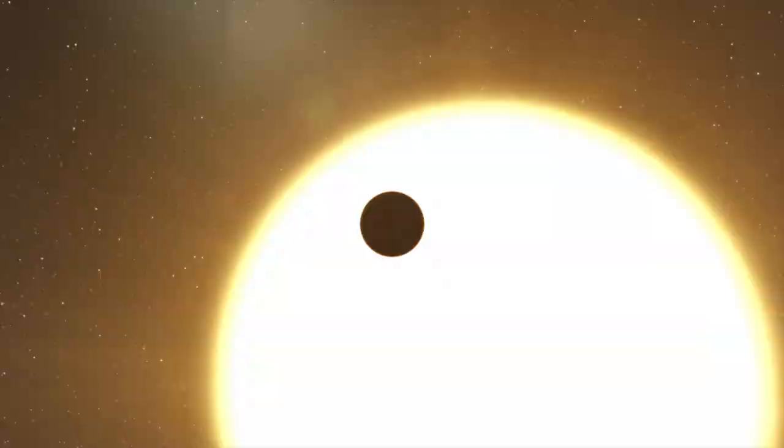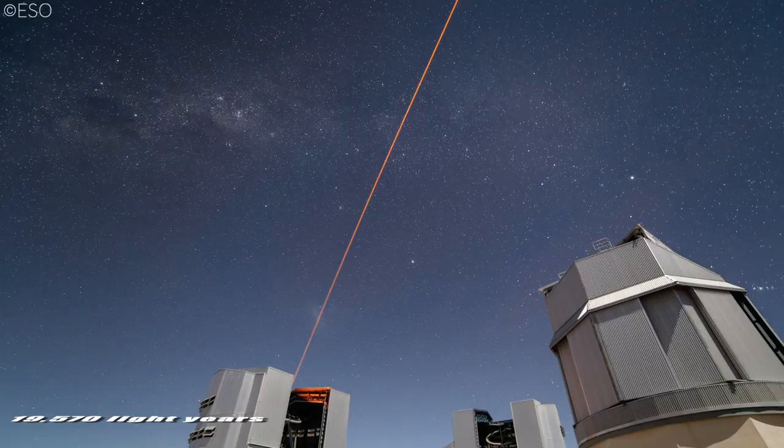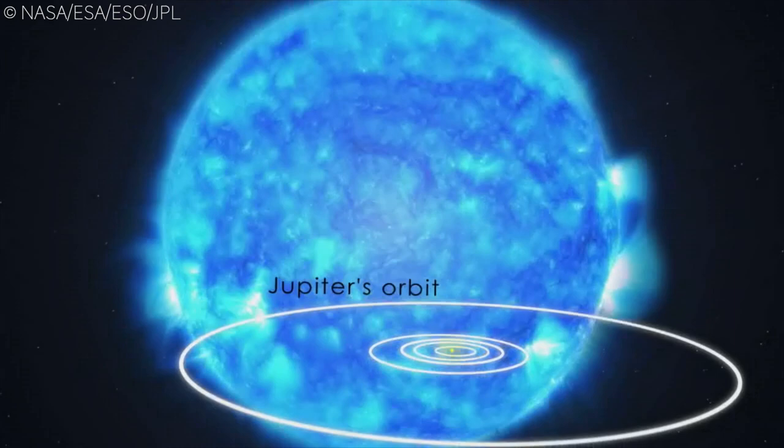For instance, the red hypergiant star Stevenson 218, which is about 19,570 light-years away, is so enormous that it can engulf every planet that revolves around the Sun inside the orbit of Jupiter.